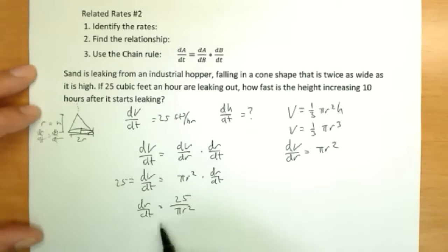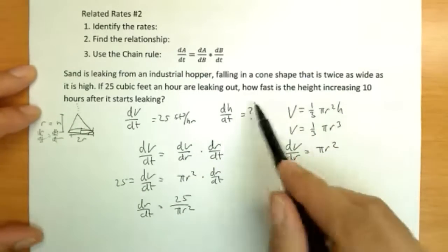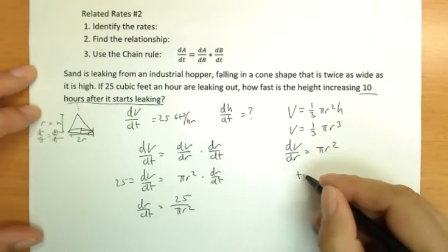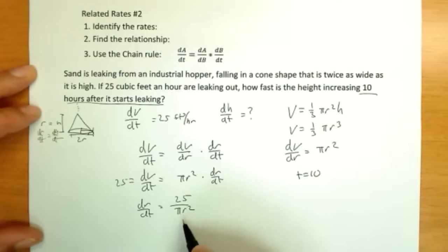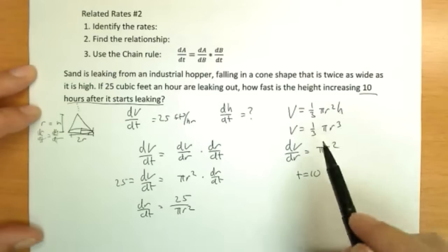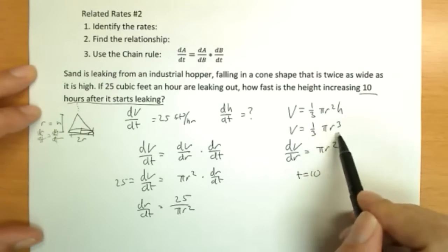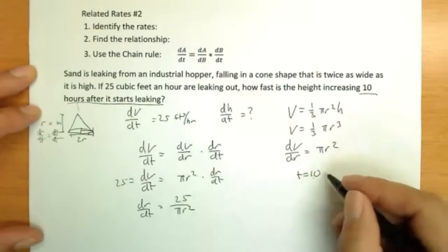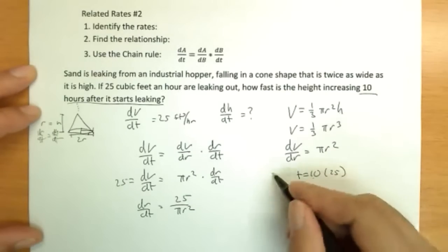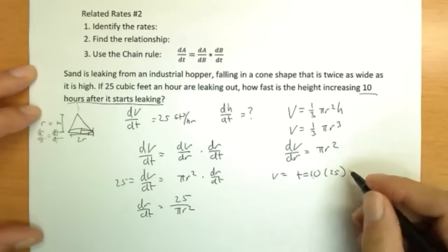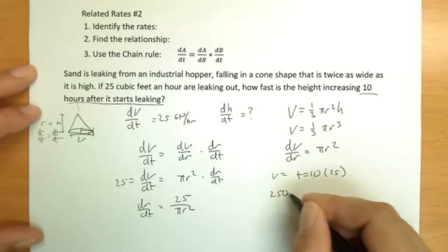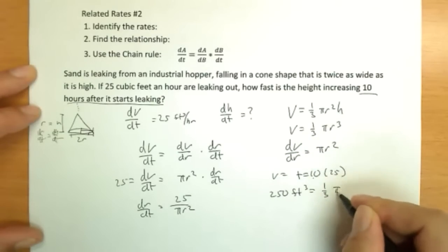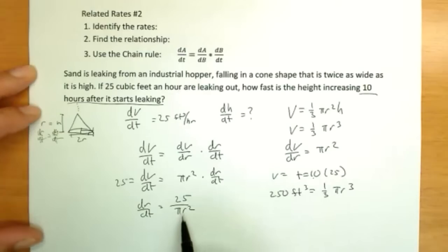Now I need to find out the actual r that corresponds with the individual information, the particular information given. How fast is the height increasing 10 hours after it starts leaking? So I'm given t equals 10, and that's not really perfect to substitute in. I need an r. Well, from this I can figure it out. Because I know that in my case, the volume is one third pi r cubed. And at 10, if I've been leaking 25 cubic feet an hour, 10 times 25 will give me the volume. It equals 10 times the amount, 25 will have 250 cubic feet. And this volume is also equal to one third pi r cubed.